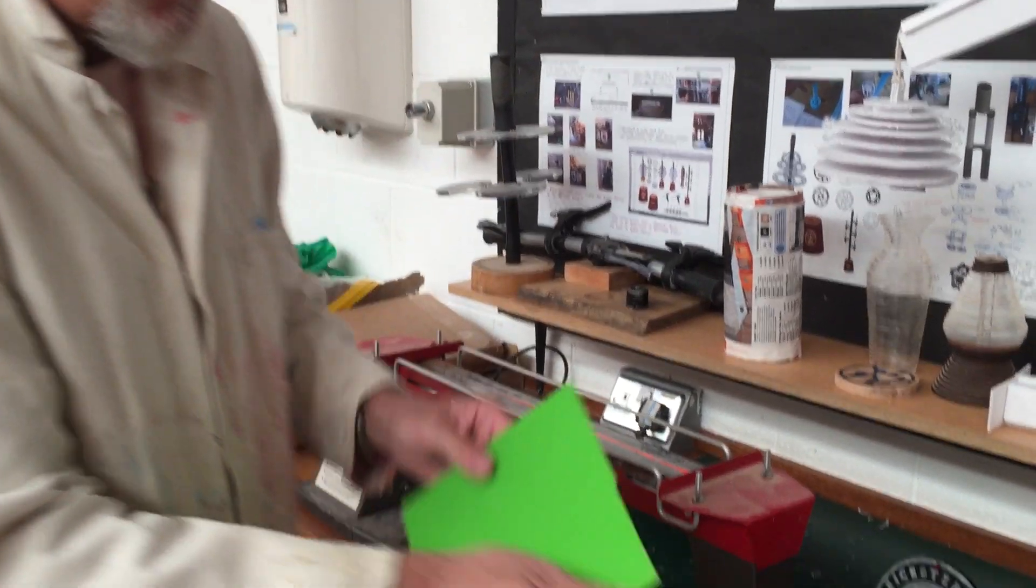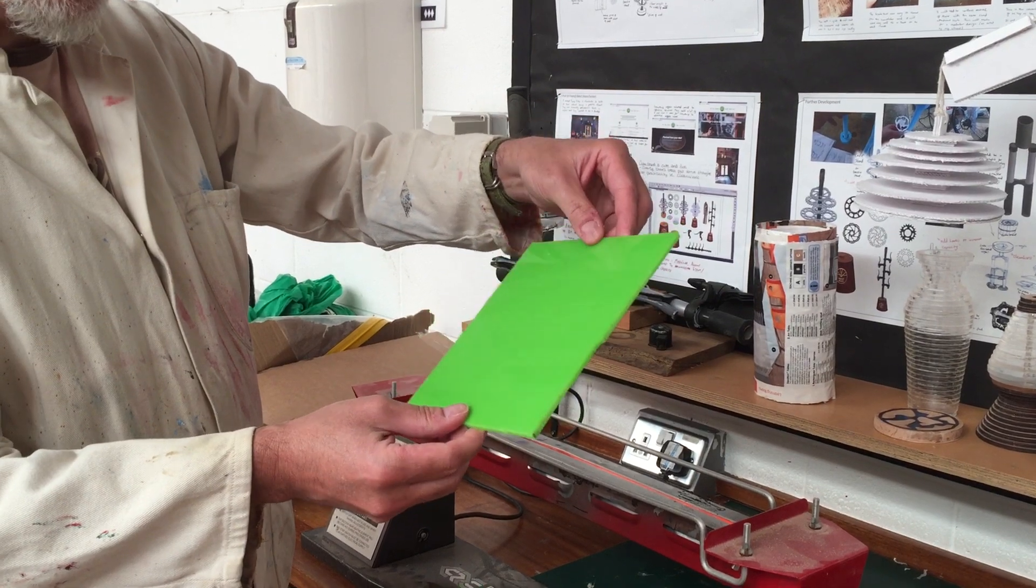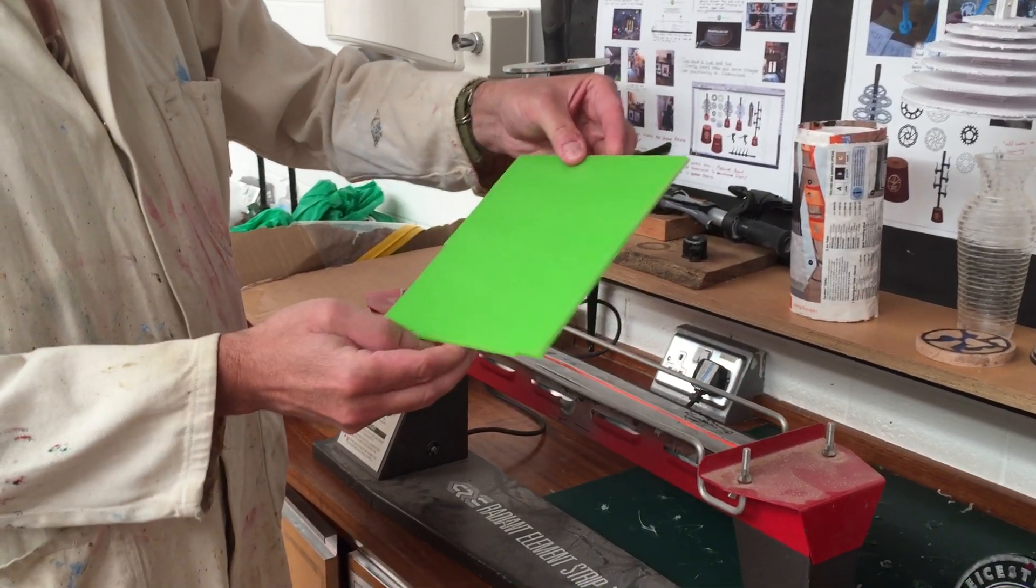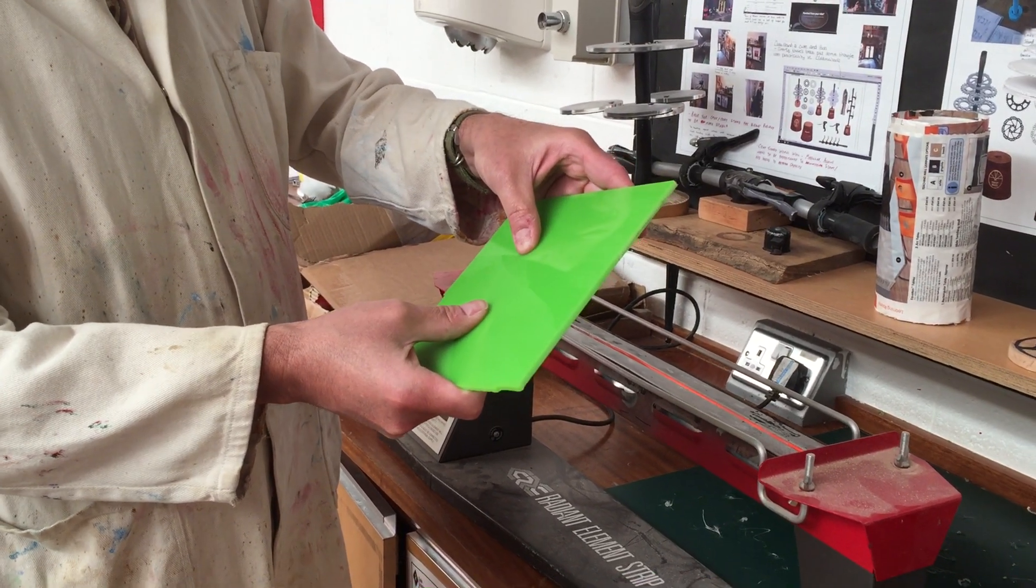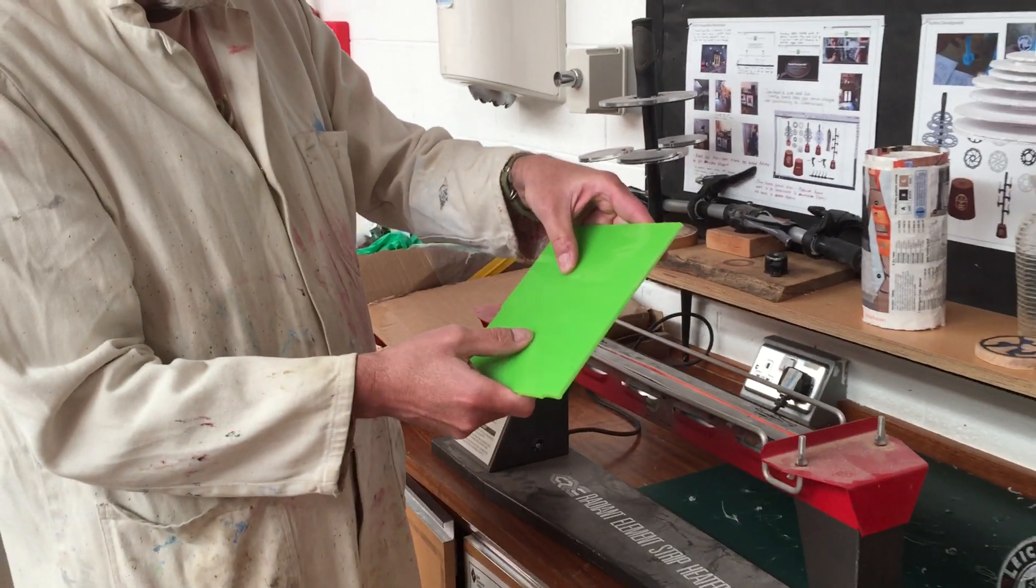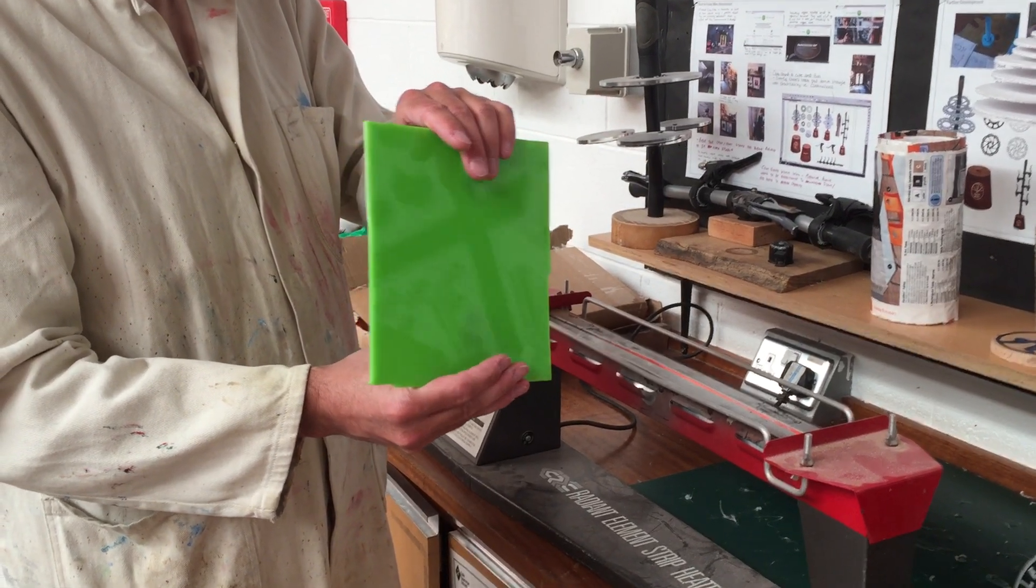Now we start off with this scrap piece of acrylic, which is a thermo-forming polymer. Thermo-forming means that it will be able to be reshaped if it is gently heated. It can be reset to a new angle or a new shape by application of gentle heat.